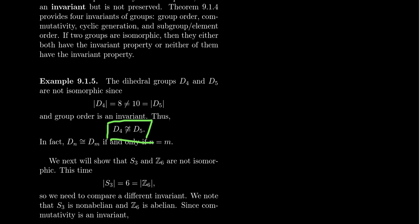There's nothing particularly special about the numbers 4 and 5 here. We get a general principle: the dihedral groups D_N and D_M are isomorphic if and only if the parameters N and M are the same. If you take the symmetry groups of regular polygons with different numbers of vertices, those won't be the same groups — D_N is not isomorphic to D_M when N and M differ.